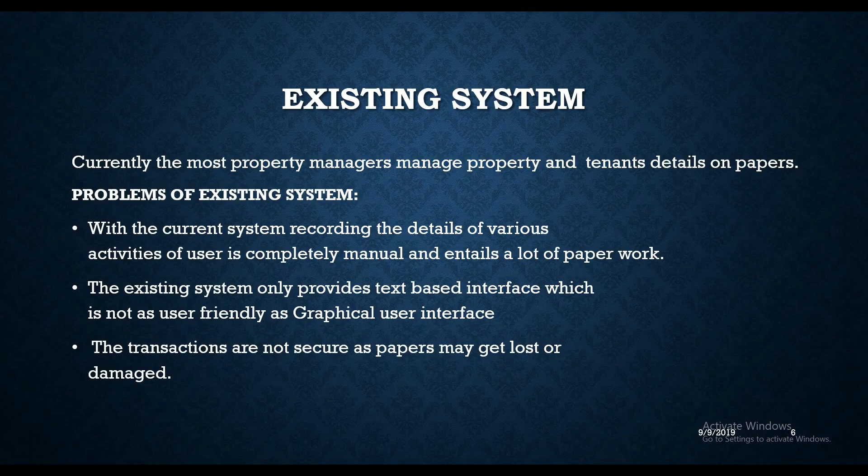After taking interviews from stakeholders and providing questionnaires, we performed another elicitation technique for secondary data collection — we surveyed an existing system to understand the problems, difficulties, and constraints behind it. The existing system means the traditional way of renting a house. Currently, most property managers handle property and tenancy details on paper. When customers find a house, they can call or email the manager indicating the size they'd like, and the manager emails back with all the details about the house.